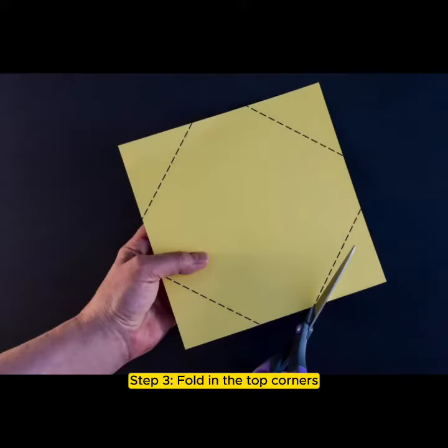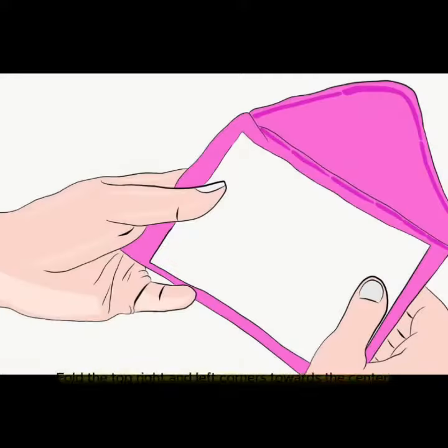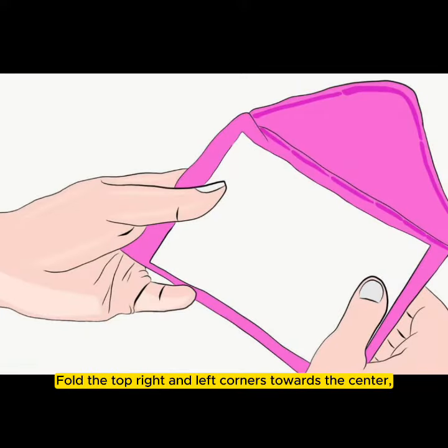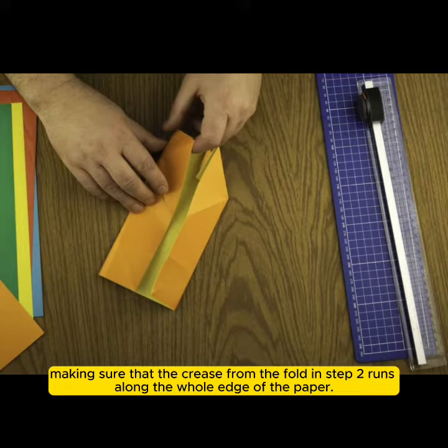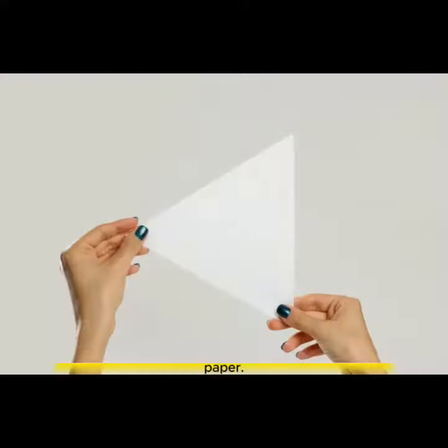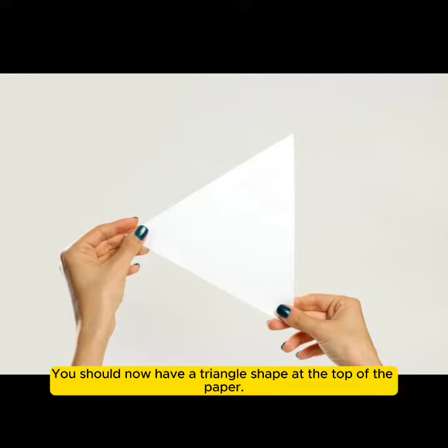Step 3: Fold in the top corners. Fold the top right and left corners towards the center, making sure that the crease from the fold in step 2 runs along the whole edge of the paper. You should now have a triangle shape at the top of the paper.